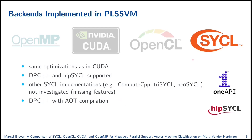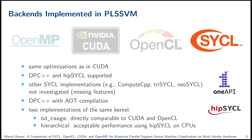Our SYCL backend uses the same optimizations as CUDA. We currently support DPC++ and hipSYCL; other SYCL implementations like ComputeCPP, triSYCL, and neoSYCL are not currently supported. We ensured that our DPC++ implementation uses ahead-of-time compilation. We implemented two kernel versions for the matrix vector multiplication: the ND-range kernel, directly comparable to CUDA and OpenCL, and a SYCL-exclusive hierarchical kernel formulation, which was necessary to get acceptable performance using hipSYCL on CPUs — a known limitation of hipSYCL.